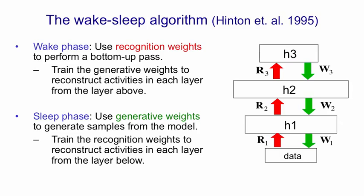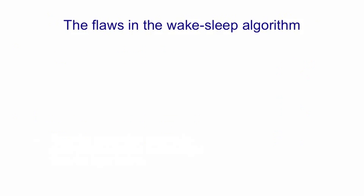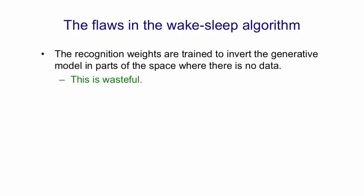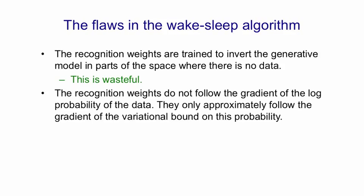It turns out that if you start with random weights and alternate between wake phases and sleep phases, it learns a pretty good model. There are flaws in this algorithm. The first flaw is a rather minor one: the recognition weights are learning to invert the generative model, but at the beginning of learning they're inverting it in parts of the space where there isn't any data, because when you generate from the model you're generating stuff that looks very different from real data since the weights aren't any good. The serious problem is that the recognition weights not only don't follow the gradient of the log probability of the data — they don't even follow the gradient of the variational bound on this probability. Because they're not following the right gradient, we get incorrect mode averaging.